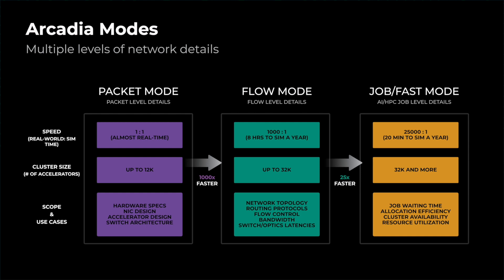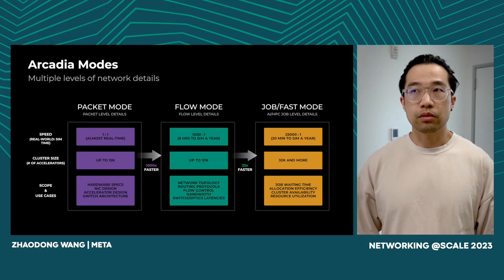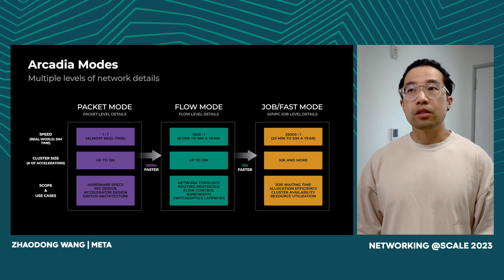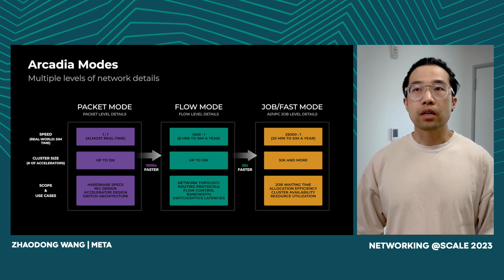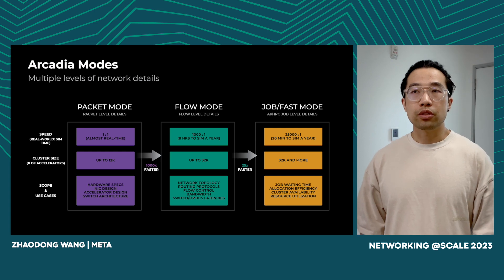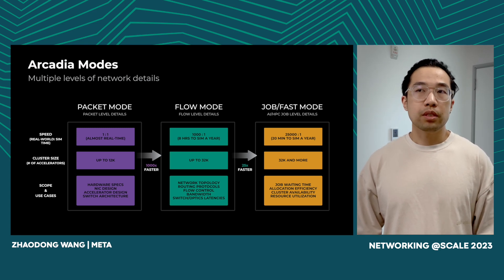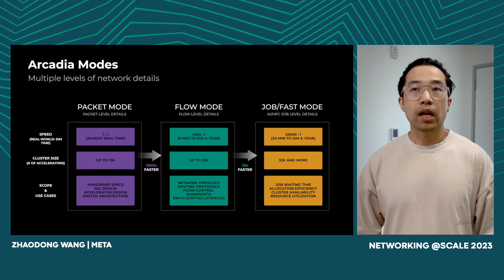The fast mode can capture the difference between different training cluster sizing, job placement algorithms, and reliability. In terms of speed, the packet mode is almost a real-time simulation, which means it will take a whole day to simulate all the events happening in a cluster in a day. The flow mode is a thousand times faster, giving us the opportunity to investigate longer-term behavior. The fast mode is pretty lightweight — basically, any production-scale training cluster can be simulated within minutes for a full calendar year.